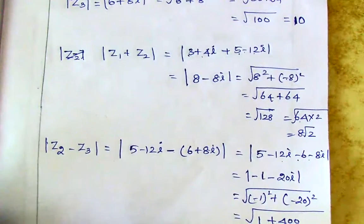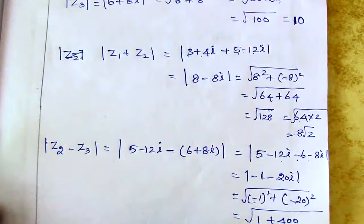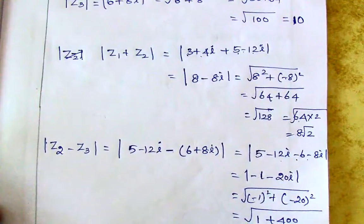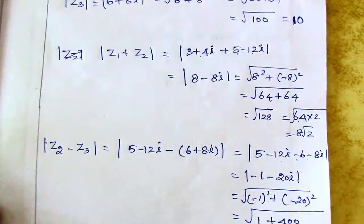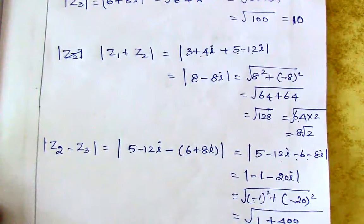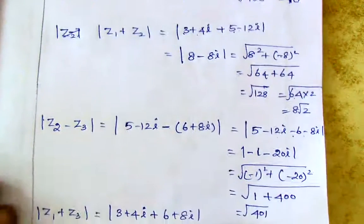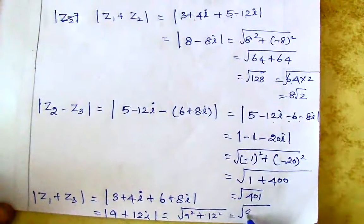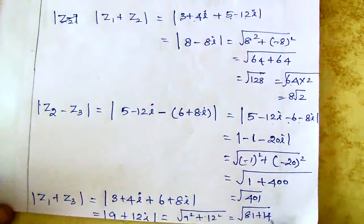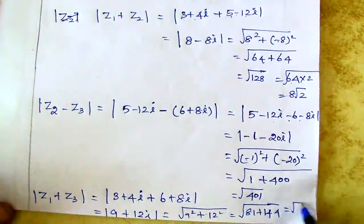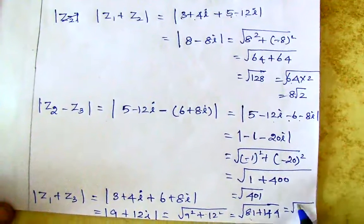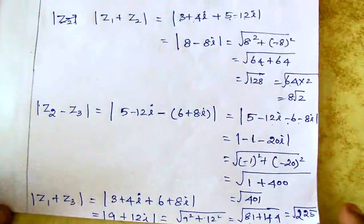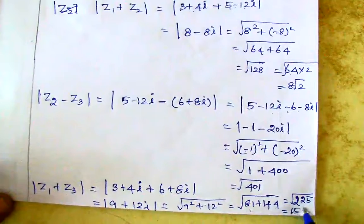Last one: modulus of z1 plus z3. z1 is 3 plus 4i, z3 is 6 plus 8i. Adding them: 9 plus 12i. Finding the modulus: square root of 9 squared plus 12 squared. 9 squared is 81, 12 squared is 144. Adding gives 225. Square root of 225 is 15 squared, so the answer is 15.